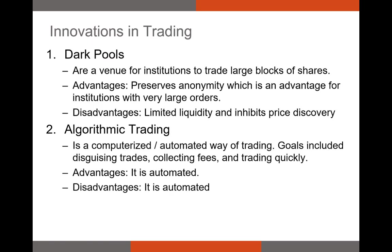The next innovation is algorithmic trading — an automated way of trading. An algorithm can process new information and trade on that information in a fraction of a second, which is beneficial if a firm needs to be the first to use some new information. Algorithmic trading can also be used to trade based on complicated formulas created by quants, or quantitative analysts. Once you write the algorithm, your profit depends on the quality of that algorithm. However, if there's an error in the code or the trading strategy doesn't work, you could find yourself losing a large amount of money.